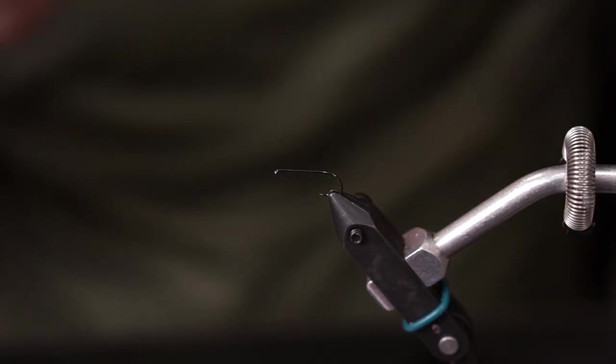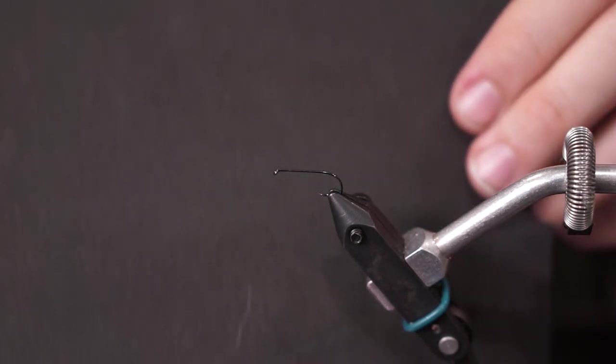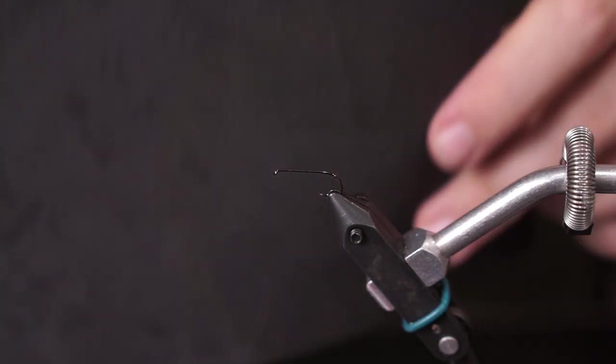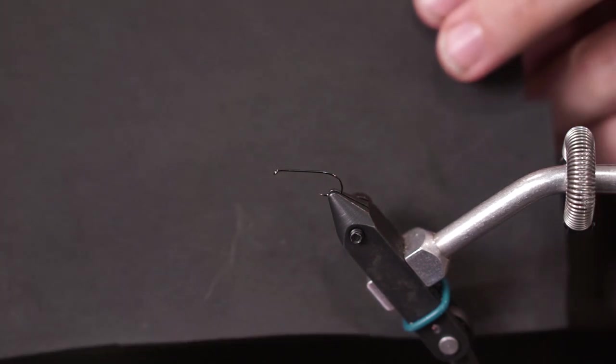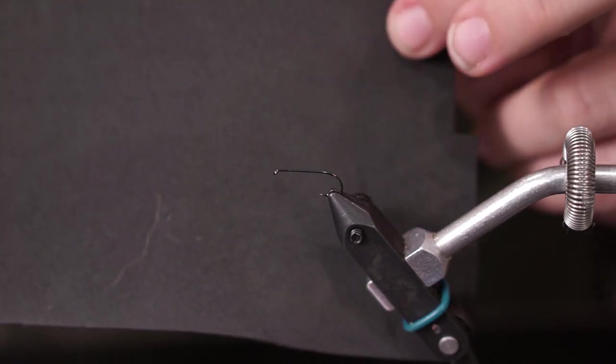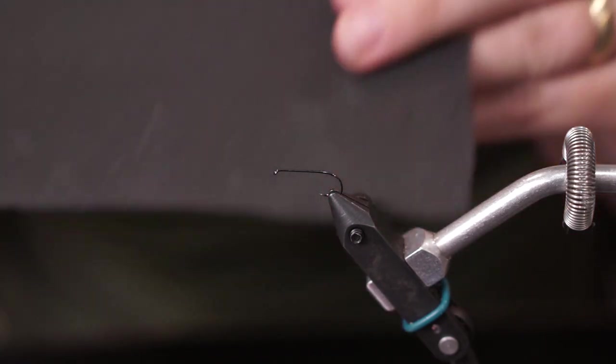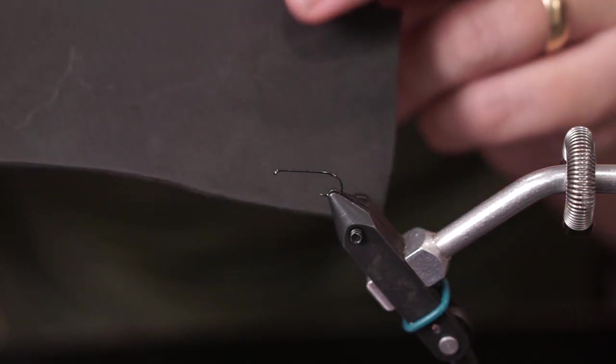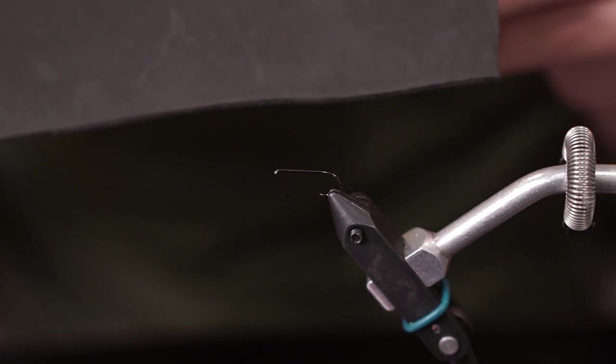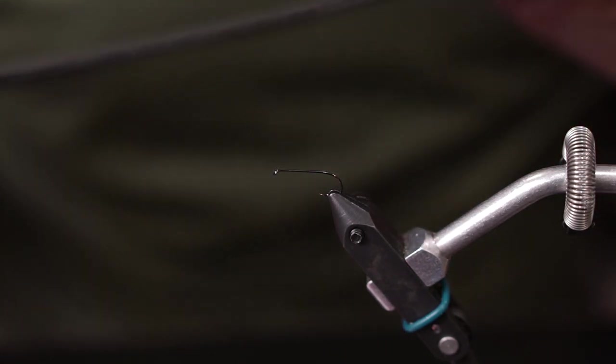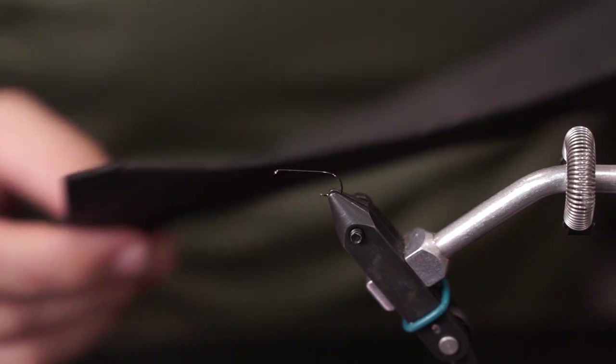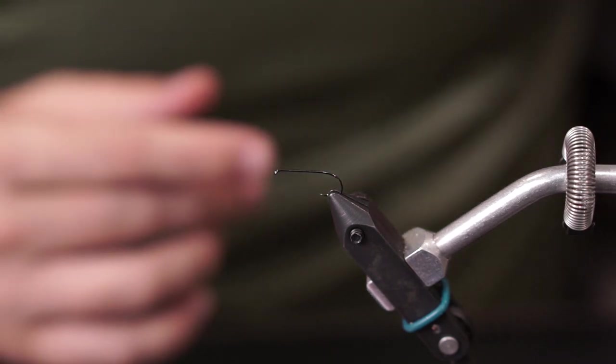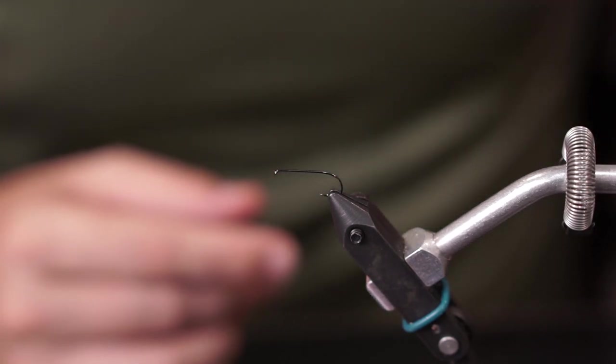For our foam I have some simple craft store 2 millimeter black foam. Now you can use whatever color foam you would like and you can use from whatever source but this happens to be a relatively inexpensive sheet of foam that you can get from most of your local craft stores. The reason why we can get away with such a relatively small thickness is we're going to be folding this over a few times when we tie this pattern.